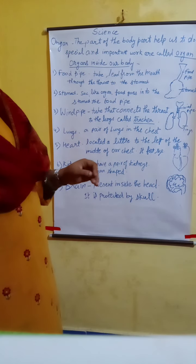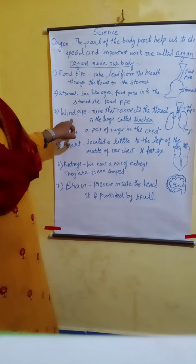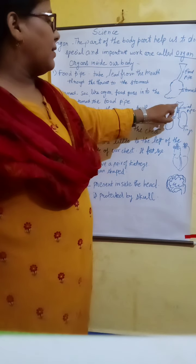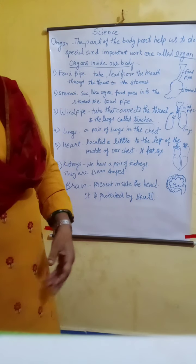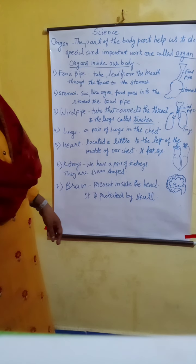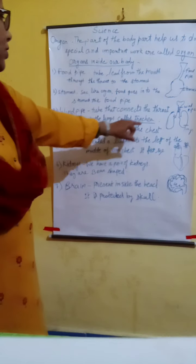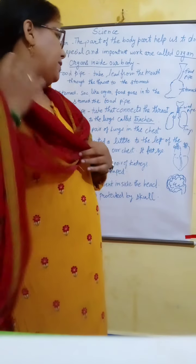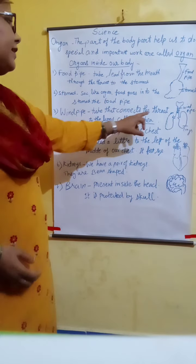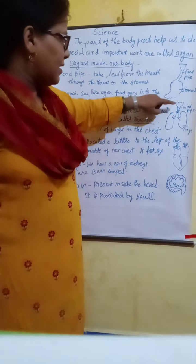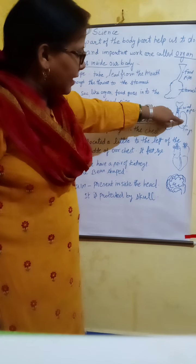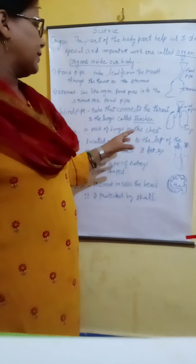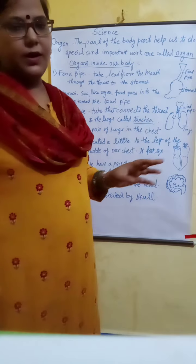The next internal organ is the wind pipe. The wind pipe is also a tube-like structure. It connects the throat to our lungs and is called the trachea.